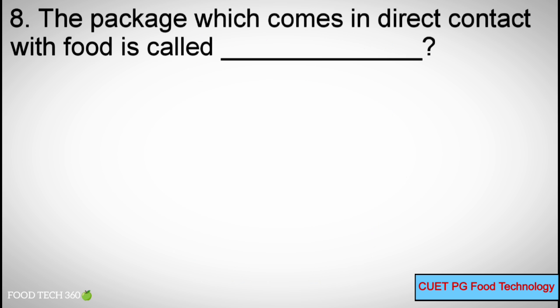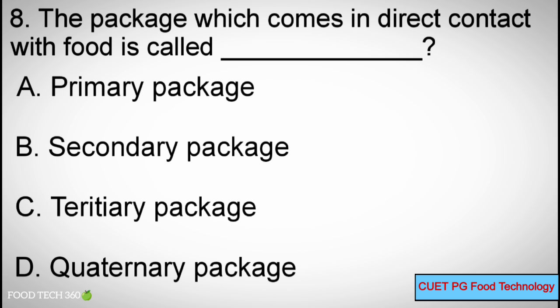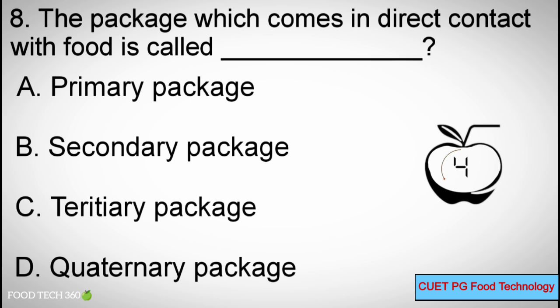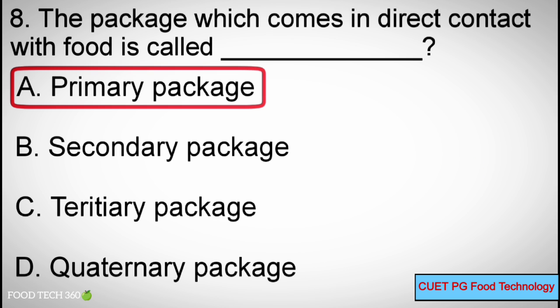Q8. The package which comes in direct contact with food is called ___. Options: A. Primary package. B. Secondary package. C. Tertiary package. D. Catenary package. Correct answer: A. Primary package.